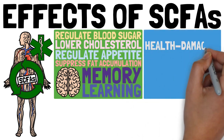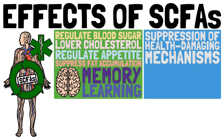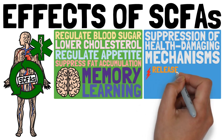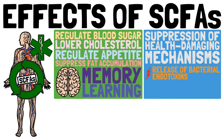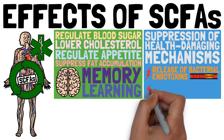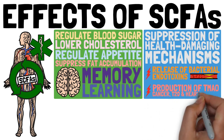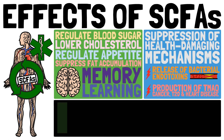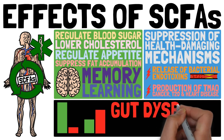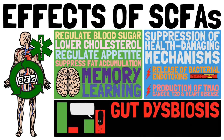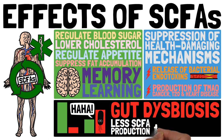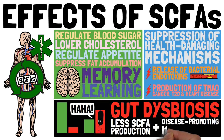Good gut health also means that health-damaging mechanisms are suppressed. These include the release of bacterial endotoxins into our vascular system — one of the main drivers of arterial inflammation — and the production of TMAO, which is linked to cancer, type 2 diabetes, and heart disease. The fewer health-promoting bacteria species there are, the higher the risk for gut dysbiosis — the dominance of disease-promoting species — meaning less short-chain fatty acid production plus the strengthening of disease-promoting mechanisms.